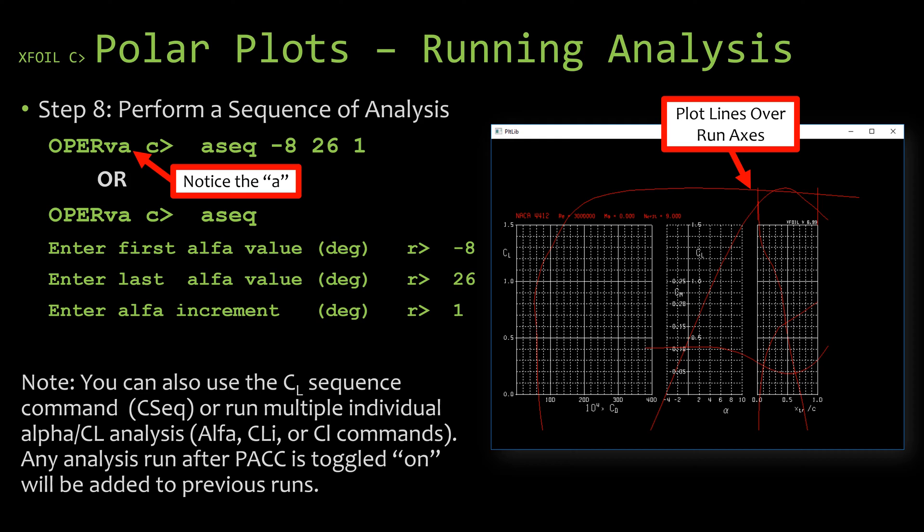For this analysis I'm going to use the sequence of angle of attack command, which is the ASEQ command, to automatically sweep through the angles of attack that I'm wanting to perform an analysis on. Now when using either the alpha sequence or coefficient of lift sequence, it's going to ask for three values. It's going to ask first for the starting value, it's going to ask second for the ending value, and the third value it's going to ask for an increment.